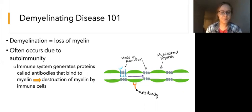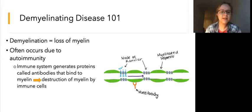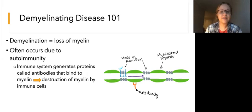In some demyelinating diseases, the immune system generates proteins called antibodies that bind to myelin on neurons. In this diagram, you can see an antibody in orange bound to a myelinated segment on a neuron axon. Antibodies are specialized immune system proteins that bind to foreign particles and target them for destruction by immune cells. The antibodies that bind myelin on neurons in demyelinating disease are called autoantibodies because they bind self particles instead of foreign particles, such as bacteria or viruses. This results in destruction of the myelin by immune cells.